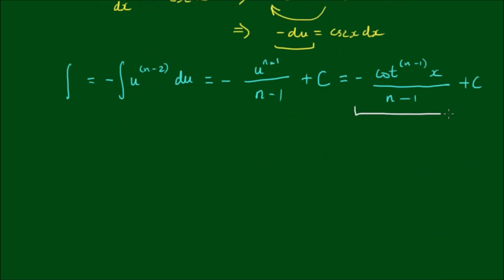So we can now put this result back into the original integral, which was the integral of cot to the nth power of x with respect to x is equal to the front integral, which we've just worked on, is equal to now negative cotangent to the n minus 1 power of x divided by n minus 1.